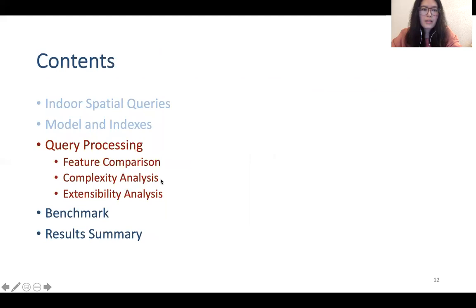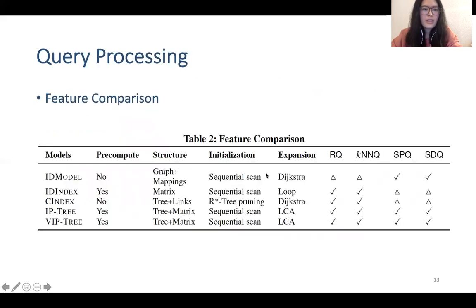Then we compare the features and analyze their complexity and extensibility. We compare whether they need to pre-compute. We can see ID index, IP tree, and VIP tree need to pre-compute to construct the index. And the structure: ID model is a kind of graph-based model, ID index is a kind of matrix-based index, and the other three are tree-based indexes.